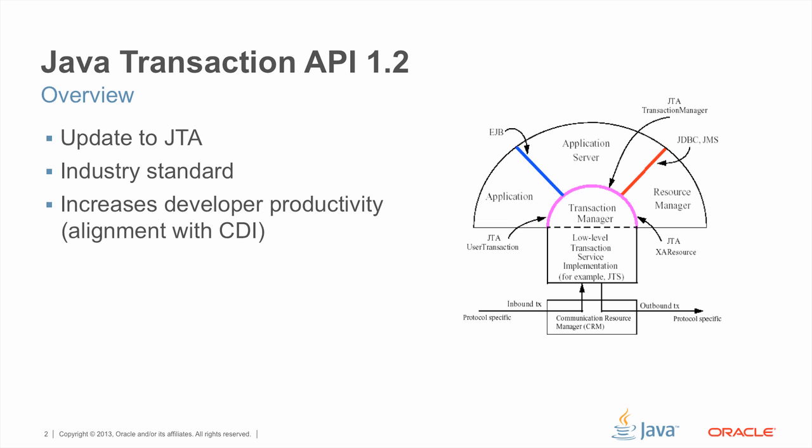What JTA provides is convenience to the application where much of this transaction management is done by the application server. Without these conveniences, the application would need to do a lot of bookkeeping with resource managers in order to achieve these transactional guarantees. The transaction API provided in Java provides ease of use for the application, and this is why it has been an industry standard for so many years. JTA 1.2 further increases the usability and ease of use of transaction systems, largely through alignment with CDI, which is a growing representation in the Java enterprise.